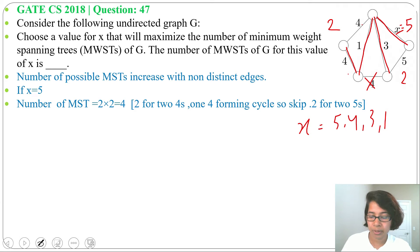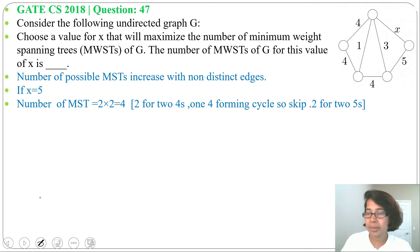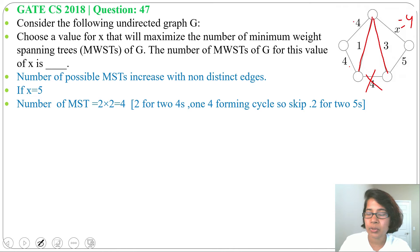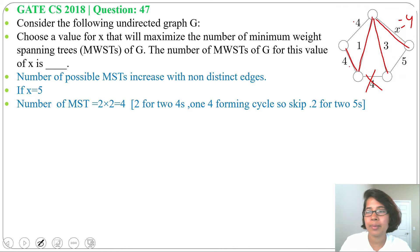So there are 4 minimum spanning trees possible when x equals 5. Now suppose x equals 4. First we choose 1, next we choose 3, then we skip that 4 which creates a cycle. From the two edges of weight 4, we choose one — so there are 2 options since x equals 4 is the minimum remaining choice.